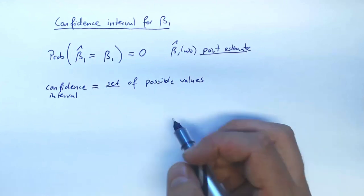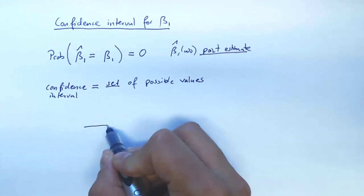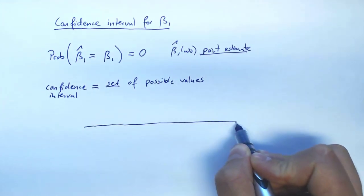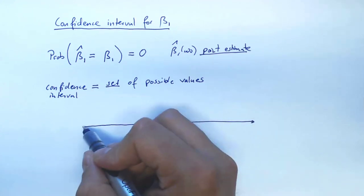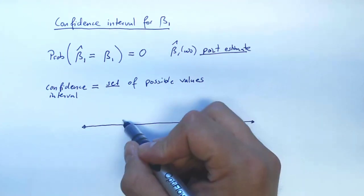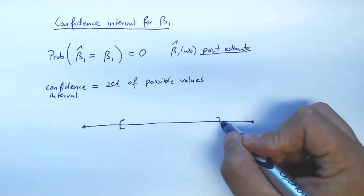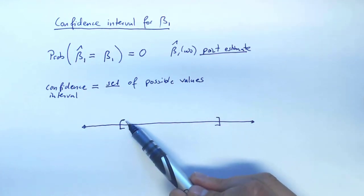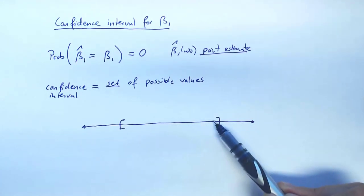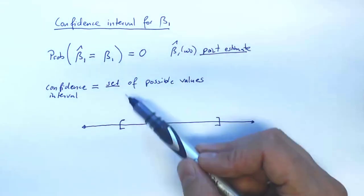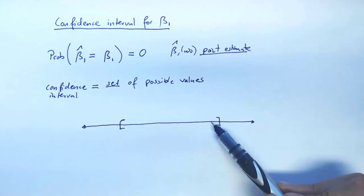And so what we're going to do is instead of just giving one number, we give a whole interval of numbers. So we're going to say, here's this interval of numbers and they are all good guesses of the true beta 1. We cannot rule out any of those.